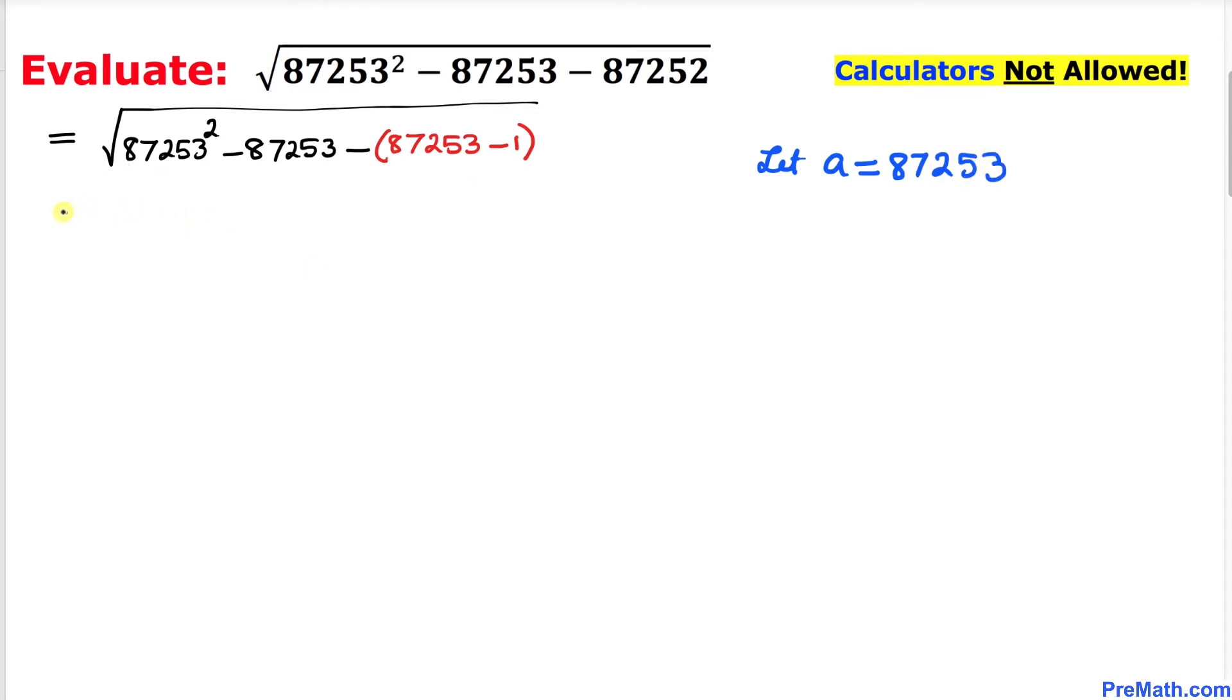So therefore, our problem is going to become simply square root of a squared minus a, and then minus in the parentheses a minus 1. And now let's go ahead and further simplify this one.